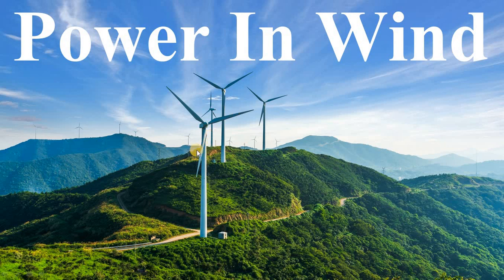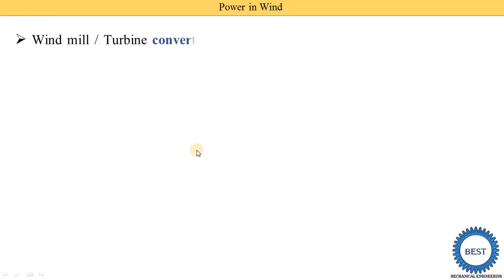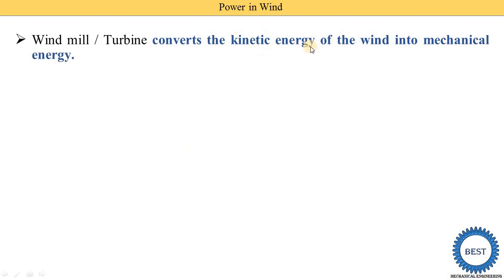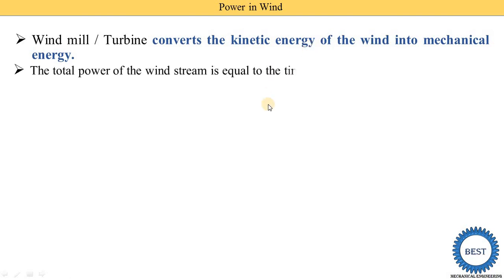In windmills, the kinetic energy of the wind is converted into mechanical energy, and this mechanical energy is converted into electrical energy by a generator. In this video, we find out the equation for the total power available in the wind. The main input to the windmill is kinetic energy, and the output is mechanical energy.